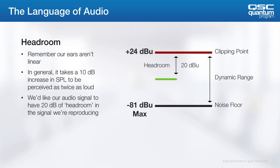If the program material in the audio system is dynamic, there could be a lot of variation in the average signal level and the peak signal level. We want to make sure that peaks will not clip the audio input. The space between the average signal level and clipping is called the headroom.